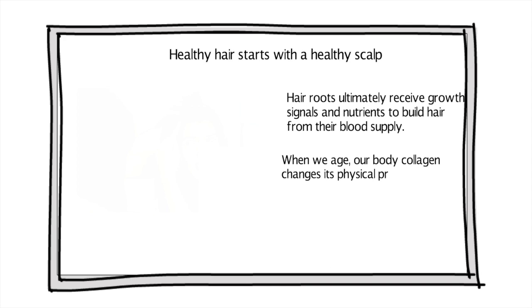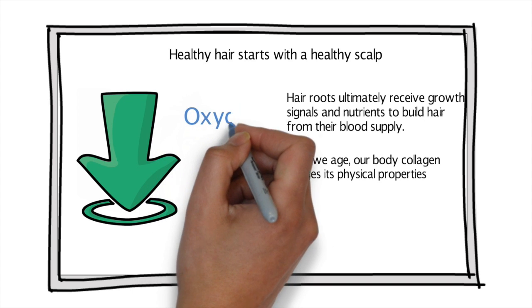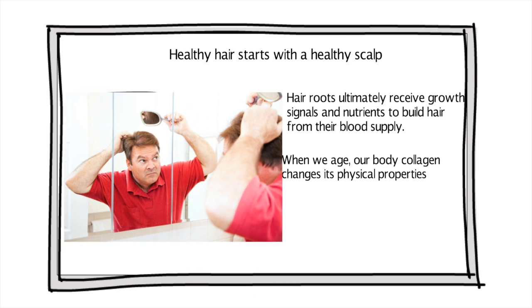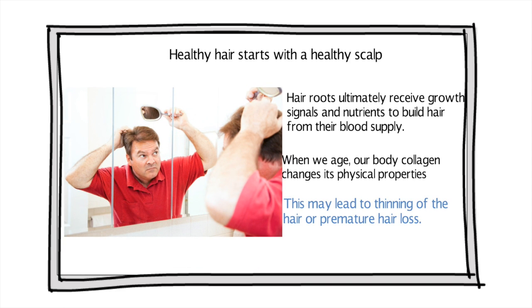When we age, our body collagen changes its physical properties, which decrease the oxygen and nutrient supply to the cells. In the scalp, this may lead to thinning of the hair or premature hair loss.